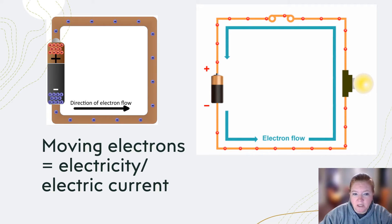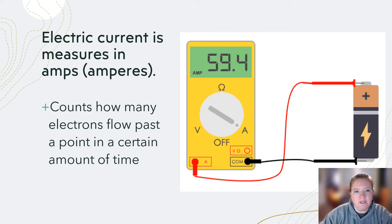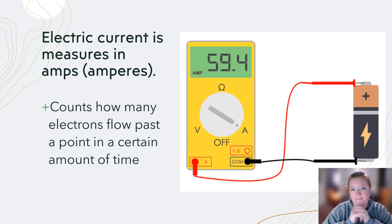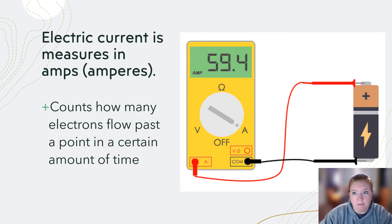How do we get electricity or current from moving electrons? Electrical current is measured in something called amps or amperes. Imagine you're sitting there counting how many electrons move past a point in a certain amount of time — that's amps. Higher amps means more electrons flowing past; lower amps means fewer electrons flowing past.